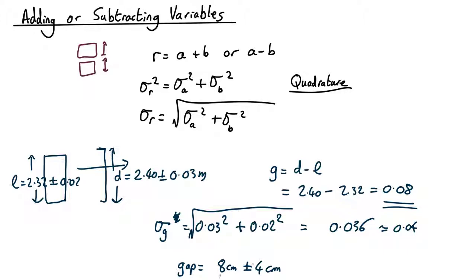So the gap will be 8 centimetres plus or minus 4 centimetres. So from that we could use our uncertainty of probability distribution functions to work out what the probability is of making it through.